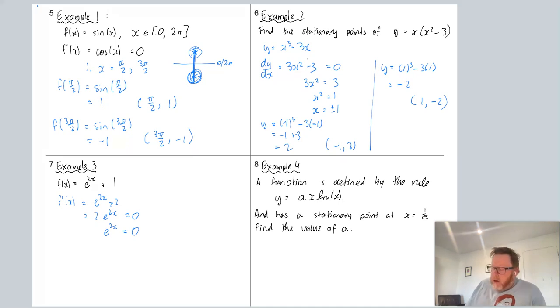So what does that mean? That means does not exist. There are no turning points for f(x) equals e^(2x) + 1. Does not exist, no turning point.